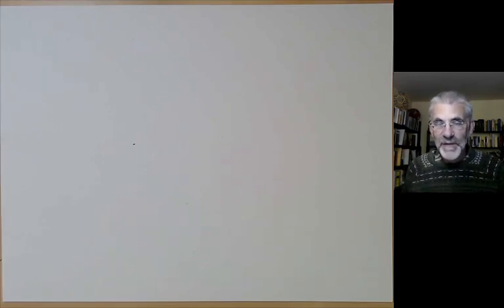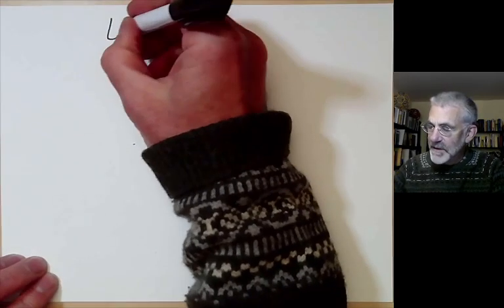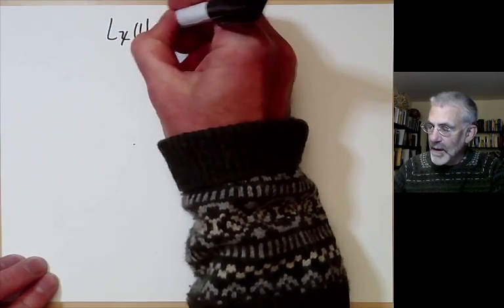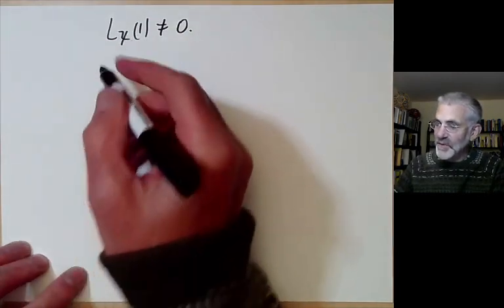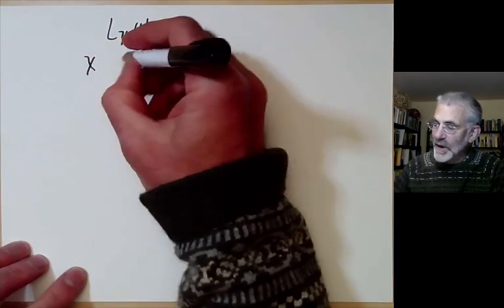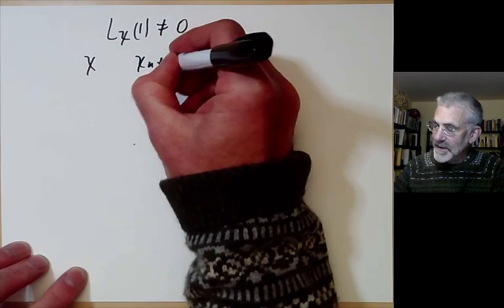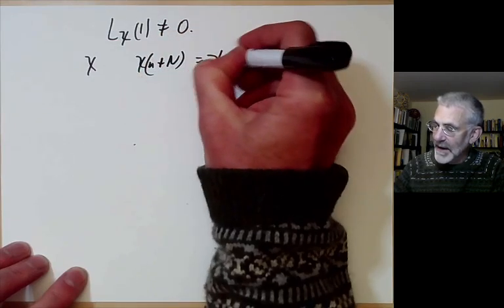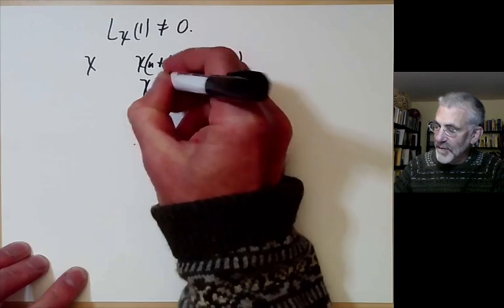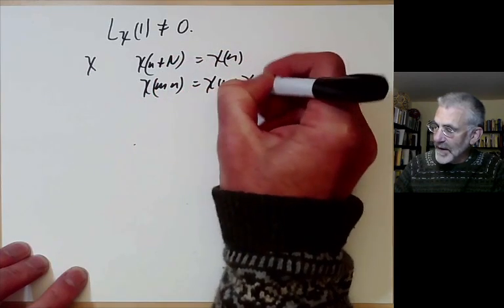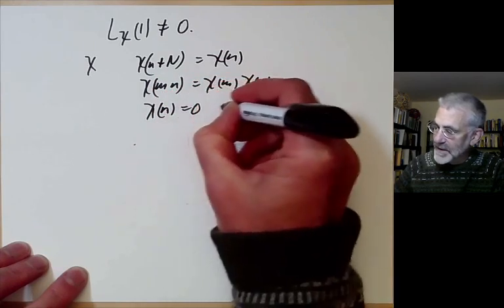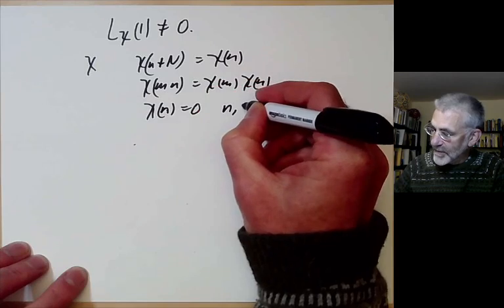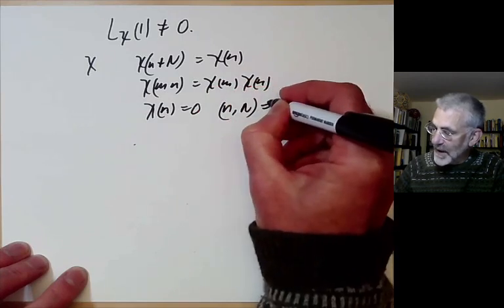This lecture is part of Berkeley Math 115, an introductory undergraduate course on number theory, and will be about proving that certain Dirichlet series do not vanish at the value s equals 1. Briefly recall: χ is a Dirichlet character, so χ(n + N) = χ(n) — it's periodic and multiplicative — and it vanishes unless n is coprime to N.